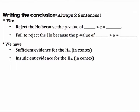Writing the conclusion always has two sentences. The first: we either reject the null hypothesis because the P-value of [value] is less than alpha of [value], or fail to reject because the P-value is greater than alpha. The second sentence states we have either sufficient or insufficient evidence to support the alternative hypothesis, stated in context.